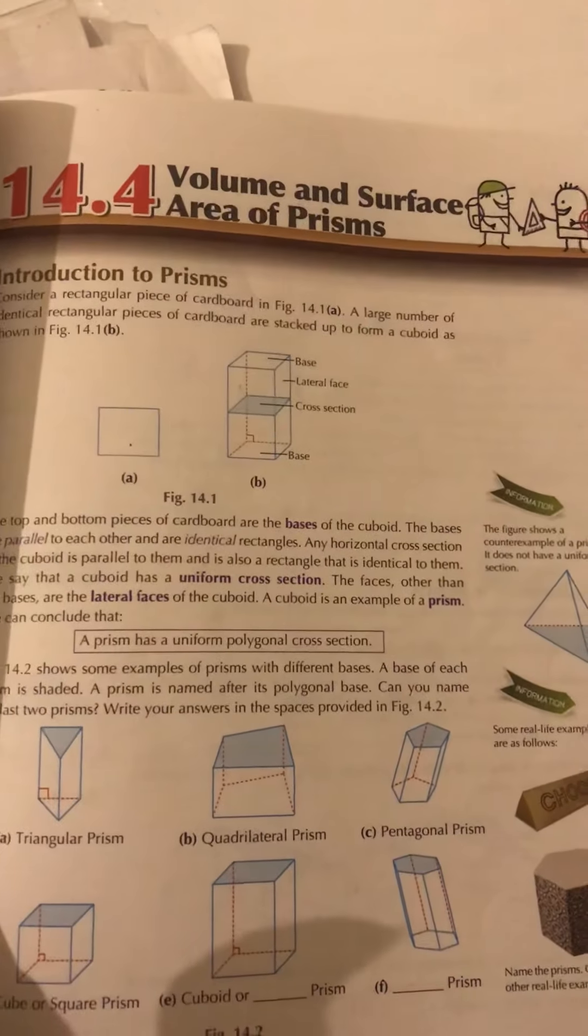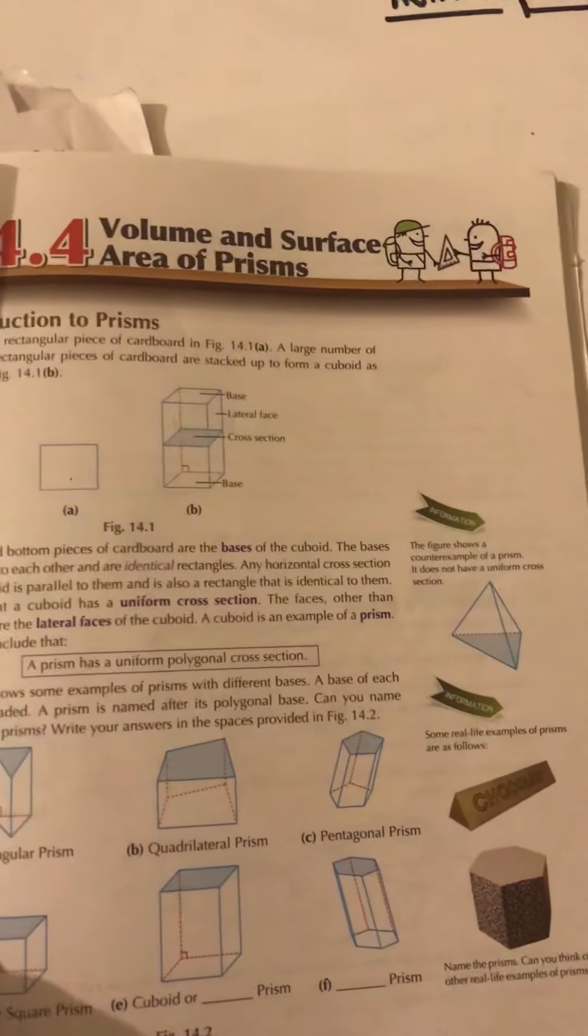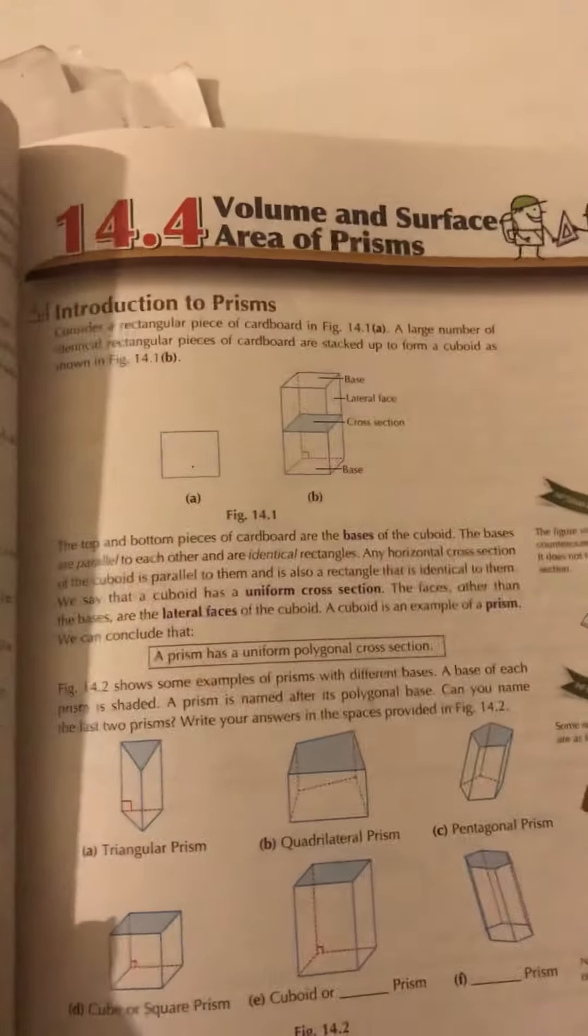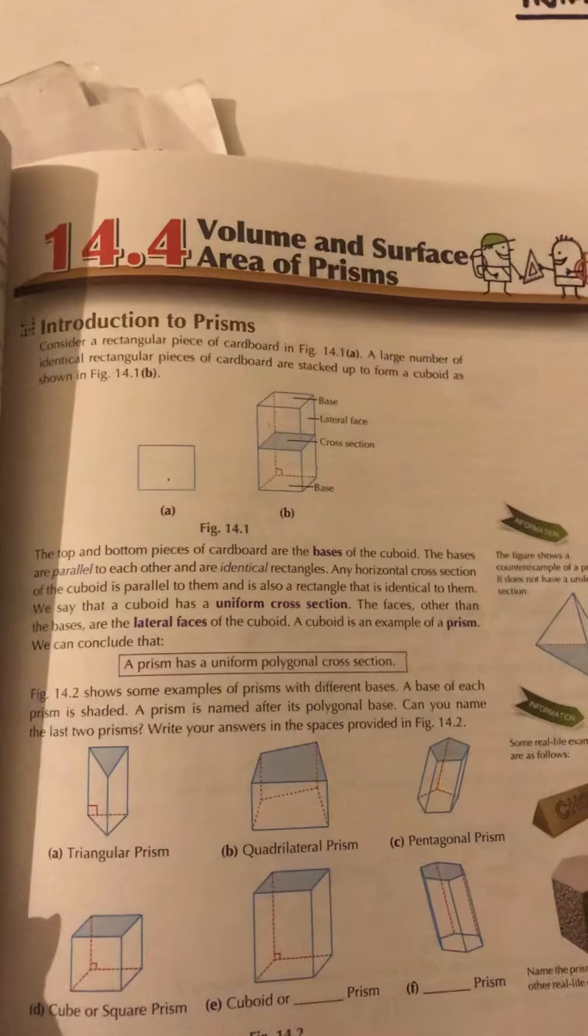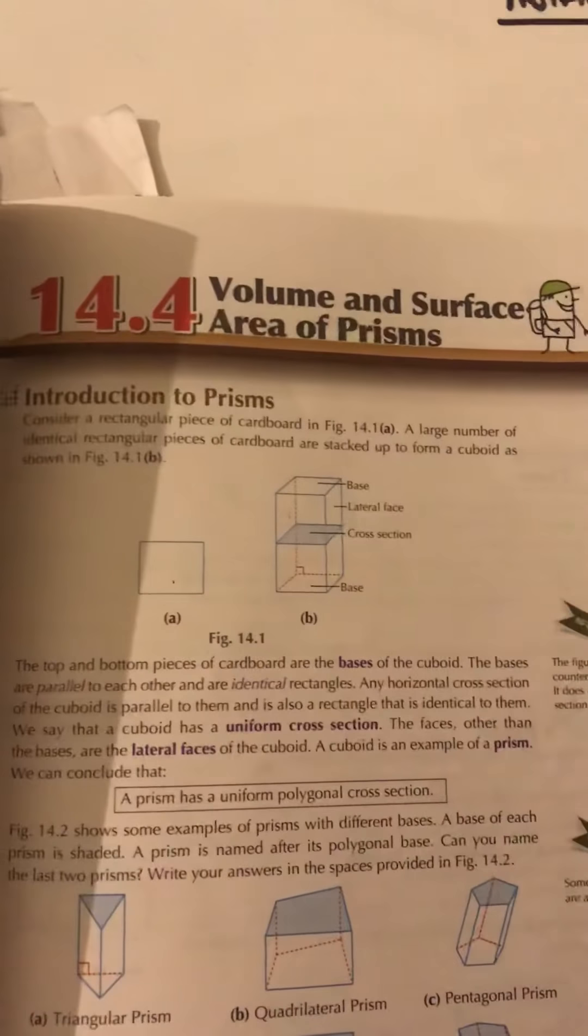Yes, cross-section - it has a uniform polygonal cross-section. What does cross-section mean? That if you cut a prism into half or from the middle, the same shape appears that belongs to its base. So let's have a closer look with the help of the diagram which is there present in the book.